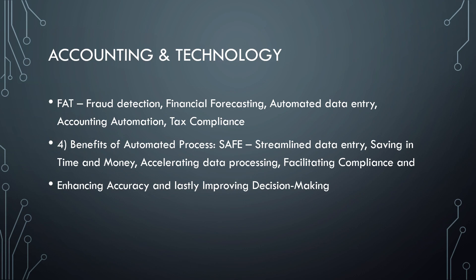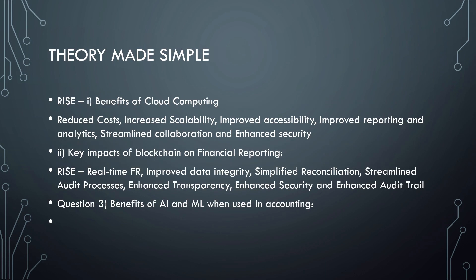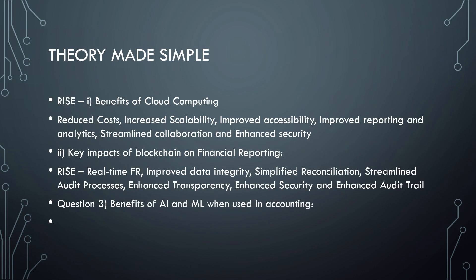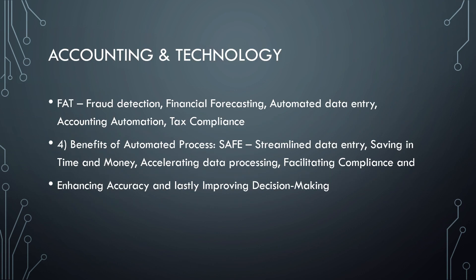Last question: I explained the benefits of automated processes — that is SAFE. I already shared this in a previous video but briefly again: S for Streamlined data entry, A for Savings in time and money, F for Facilitating compliance and enhancing accuracy — also Accelerating data processing. E for Enhanced accuracy. Previously we saw Enhanced transparency, Enhanced security, and Enhanced audit trail — here it is Enhancing accuracy and Improved decision making.